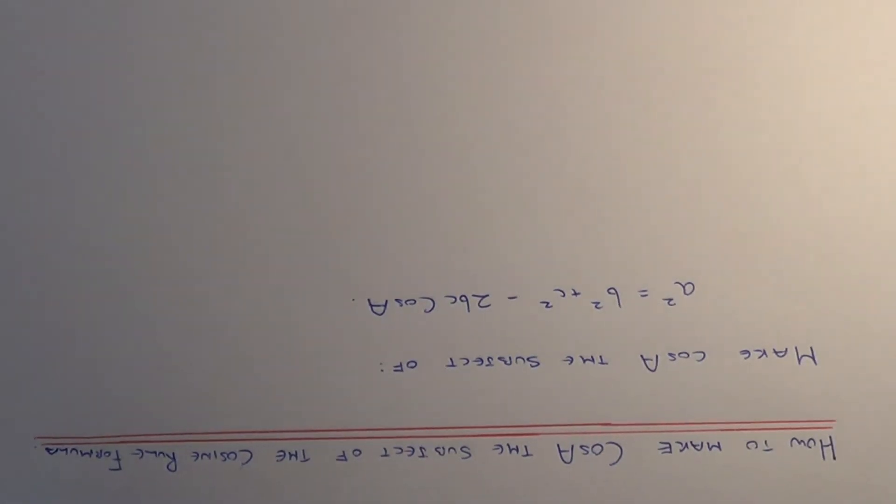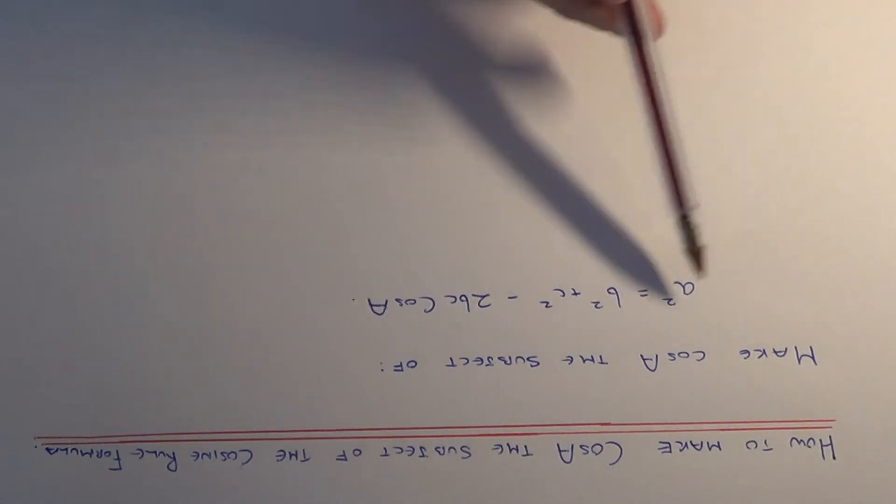Hi, welcome to this short video on how to make cos A the subject of a squared equals b squared plus c squared minus 2bc cos A. So this is your formula for the cosine rule here.